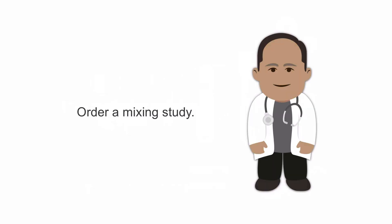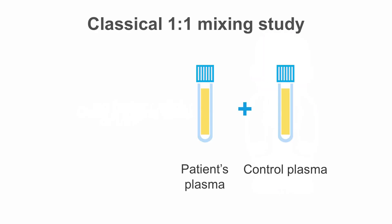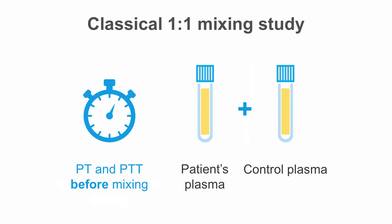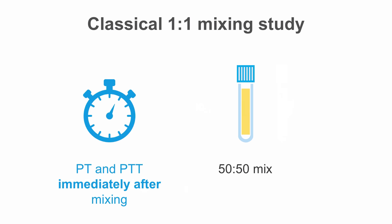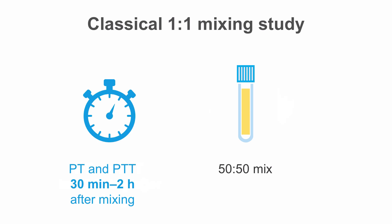The next test to order to answer this question is a mixing study. The basic principle is we will measure PT and PTT before mixing and twice afterwards. The first one will be immediately after mixing and the second one will be anytime 30 minutes to 2 hours after mixing. The abnormal PT or PTT will either correct — that is, normalize — or fail to correct — that is, does not normalize.